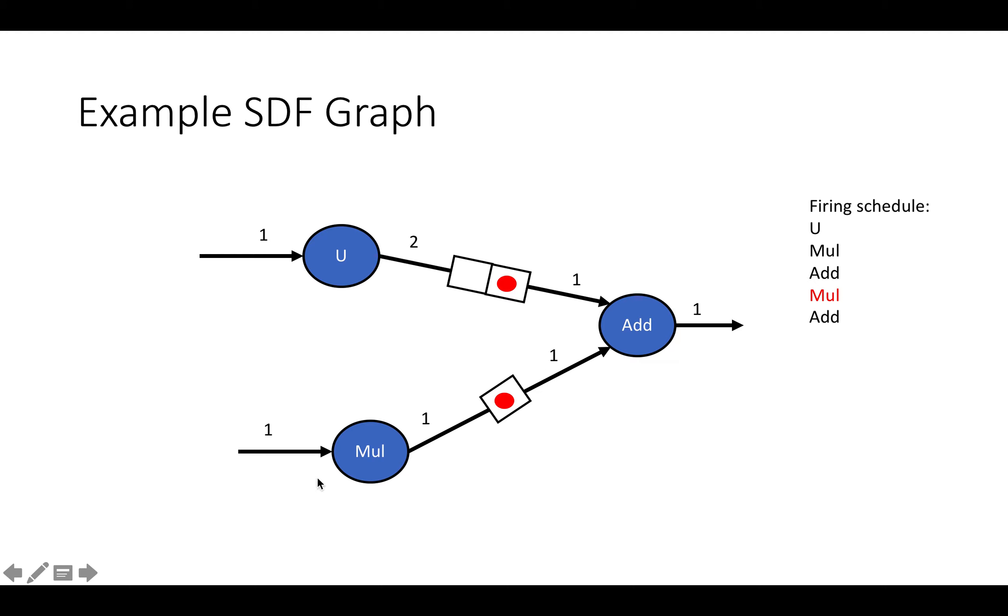Then we're going to fire our multiplier again, and we're going to put one more piece of data in the FIFO. Then we're going to fire our adder again. And now the multiplier FIFO and the upsample FIFO are empty. We've fired every single node at least once. And so we can repeat this sequence over and over again without overflowing our buffers.